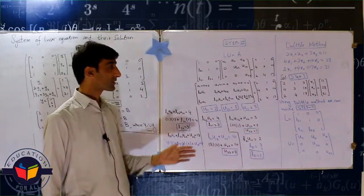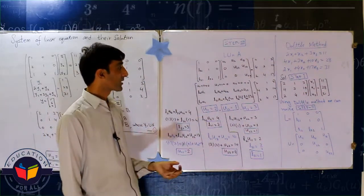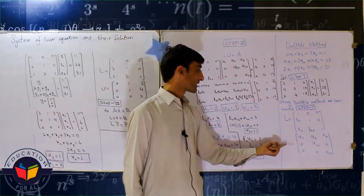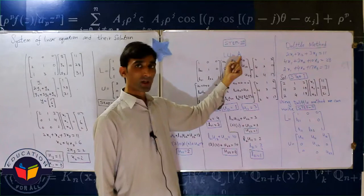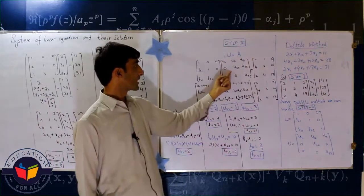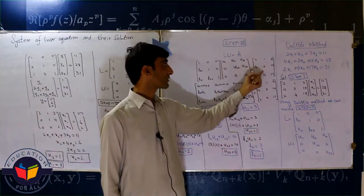Now this one is L and this one is U that we write: LU equal to A. This one is L and this is U, this is equal to A.